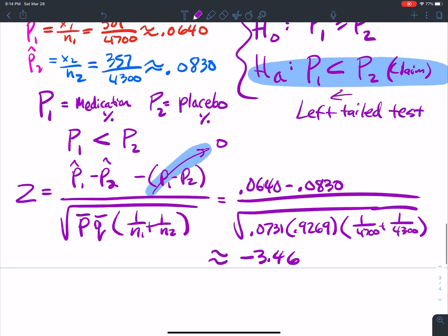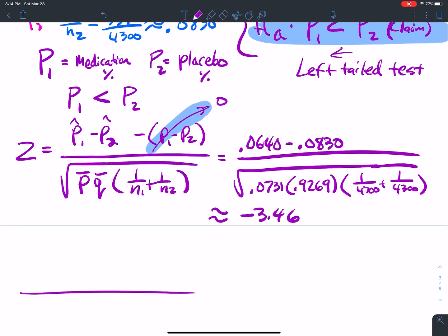Now I need to do my critical values. It's a left-tailed test. So alpha is equal to 0.01.